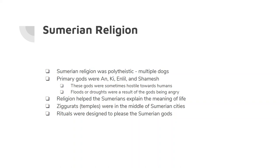These gods are sometimes hostile towards humans, sometimes helpful towards humans — sometimes they're about retribution, sometimes about success. The Sumerians used these gods to explain nature: if a god is unhappy, it rains too much, or if a god is unhappy, it doesn't rain at all. Their temples were called ziggurats, and these ziggurats are like stepped temples — think of Aztec or Mayan temples. They were located in the middle of Sumerian cities, and rituals were done at the top of the temples. Within the temple, food was stored and the priests worked. The Sumerians also had rituals and sometimes sacrifice rituals.